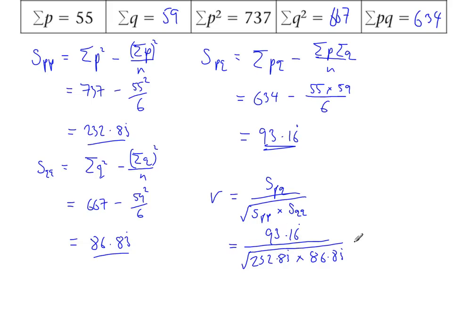So 93.16 divided by the square root of 232.83 times 86.83 recurring. I've got this value in my calculator, so I'm just going to use ANS for that. For the other ones, I'm just going to type them in as a decimal. I'm just going to put in a whole load of threes at the end so I know that my answer is supremely accurate. I've worked this out. This comes to 0.655 to three significant figures.